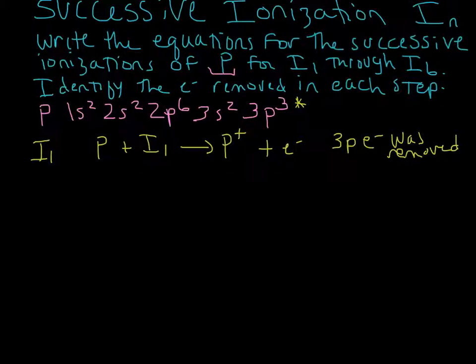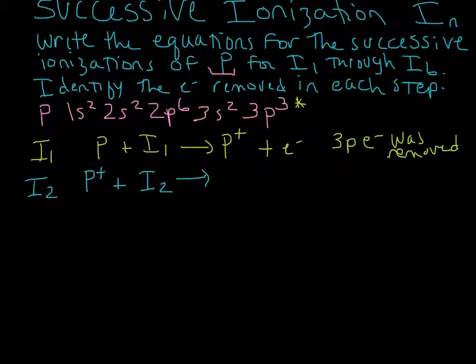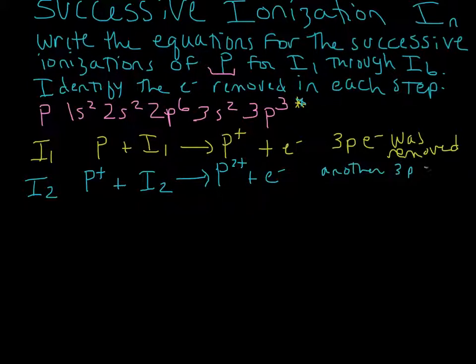Now let's do I2 — removing the second electron after the first one's already gone. This requires an additional amount of energy, I2, which is going to be higher than I1 because ionization energies always increase as we take away more and more electrons. We take our phosphorus 1+ cation, put in I2 of energy, and end up with phosphorus 2+ and an electron. We have three 3p electrons total, so we removed another 3p electron.